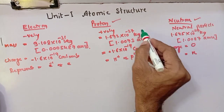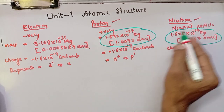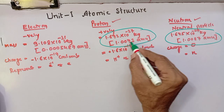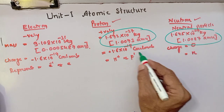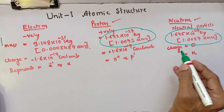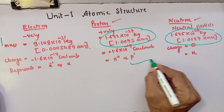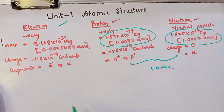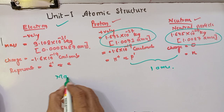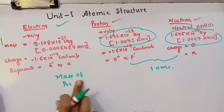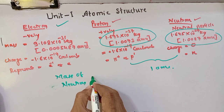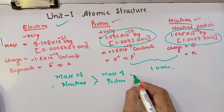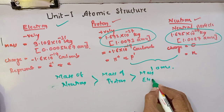If you compare the mass of neutron and mass of proton, the mass of neutron is slightly more than that of the proton: mass of proton is 1.0073 atomic mass unit whereas neutron is 1.0087. But for practical purposes, we consider the masses of both proton and neutron as the same — that is, one atomic mass unit. Thus, comparing all three: mass of neutron > mass of proton > mass of electron.